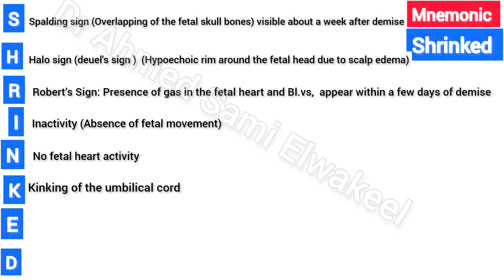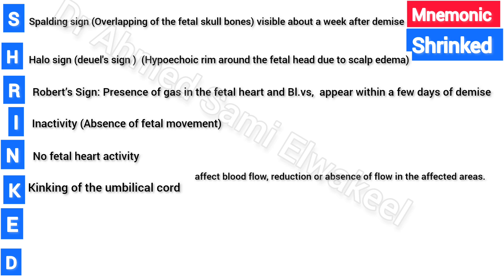K is for kinking of the umbilical cord, which can be observed on color Doppler imaging. It may affect blood flow, reducing or eliminating flow in certain areas. It is also important to measure the diameter of the umbilical cord.